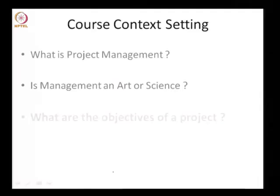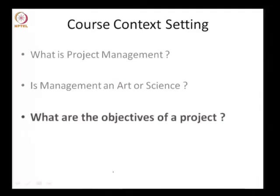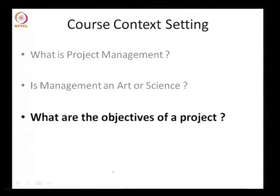We have taken the first two questions, and now we come to the third question. When we are looking at the science of something, we need to be able to understand our goal. We take a project, we define what a project is, we said project needs more science, project management needs more science. One of the scientific approaches is to know your goal and work your way towards it. So, what are the goals of project management?